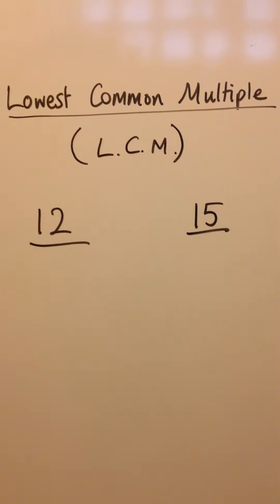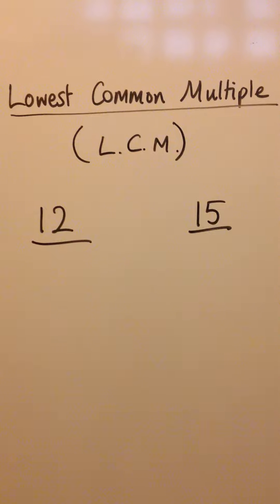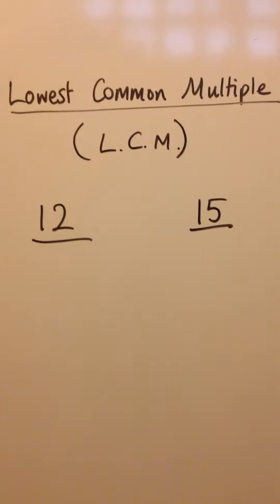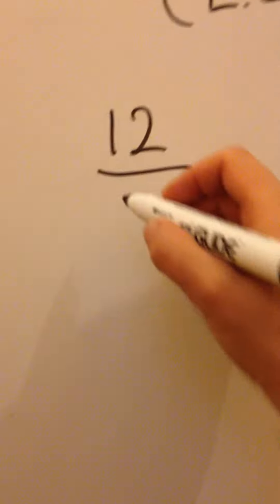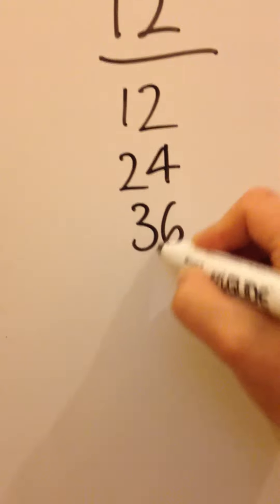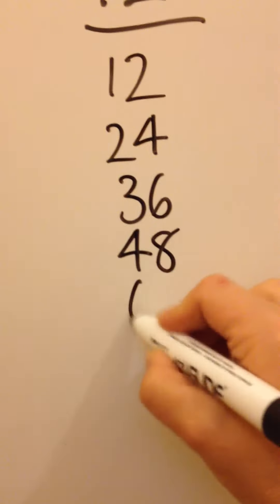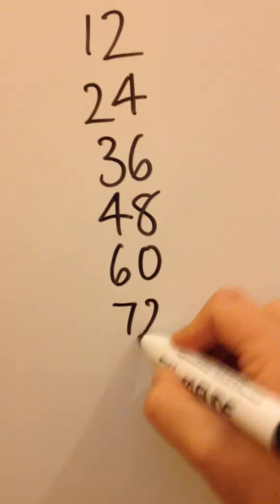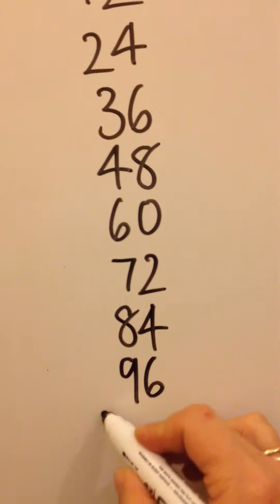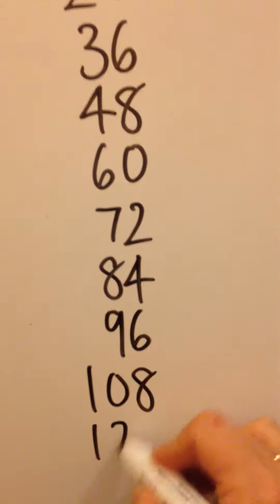To find the lowest common multiple, we're looking for one that is in both, and it needs to be the lowest one. So let's write down some multiples of 12. We've got 12, 24, 36, 48, 60, 72, 84, 96, 108, and 120.